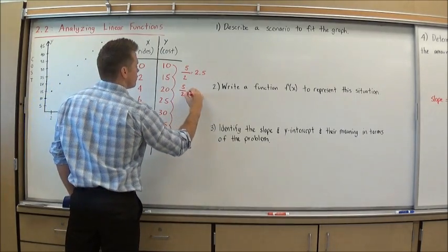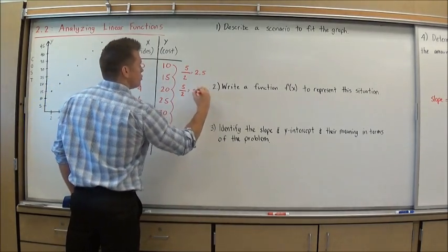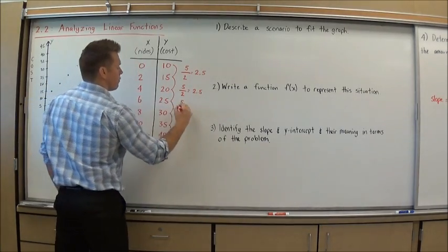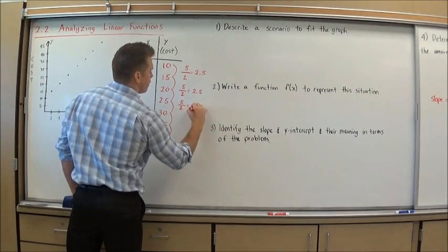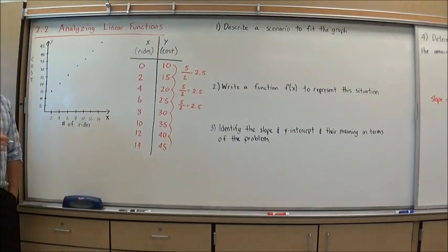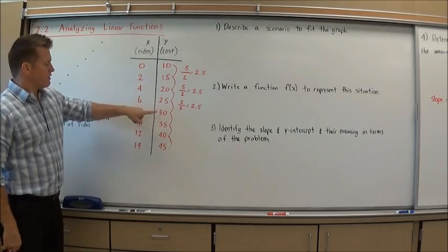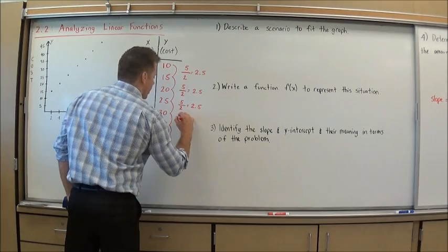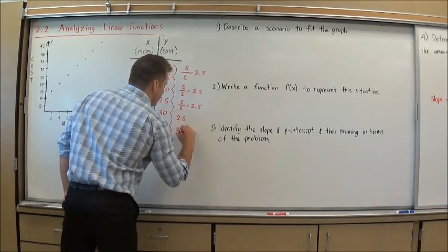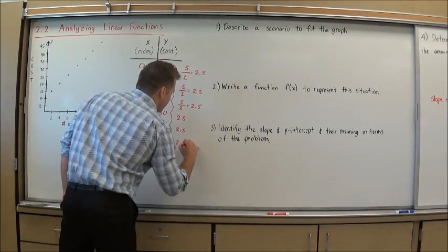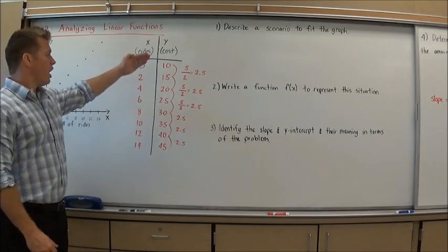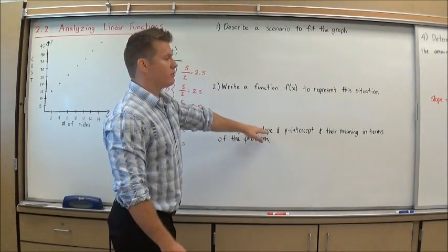As I look at the next change, the change is 5 from 15 to 20. The change in the x's is 2, which is 2.5. It's consistently changing by 5 in the y and consistently changing by 2 in the x. That is always 2.5. Now that verifies to me this is a linear function, because in a linear function there's a constant rate of change, a.k.a. a slope.